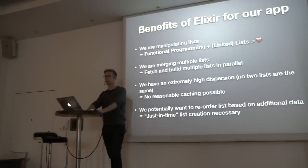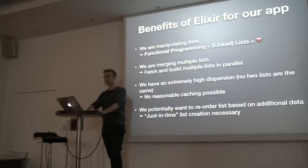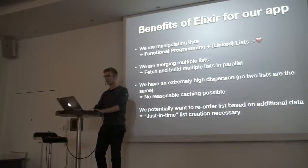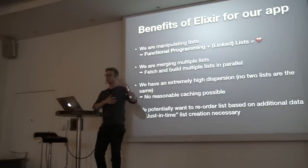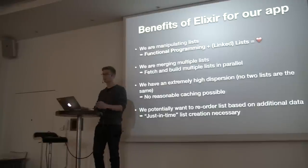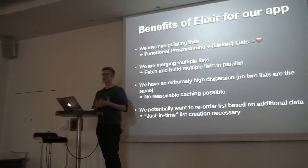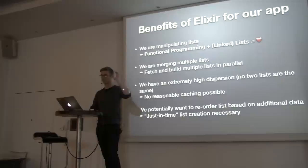There are other reasons to use a language like Elixir for this. It turns out that functional programming languages like linked lists — it's a very good data structure to use in a functional programming language, and those lists you've seen are linked lists. So the data structure pretty much encourages you to use a functional programming language. If you look at that start page, there are multiple lists of multiple teams that you merge. We have users with up to 50 or 60 different teams they subscribe to.